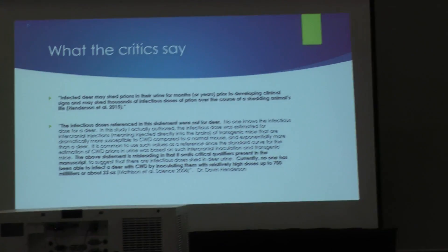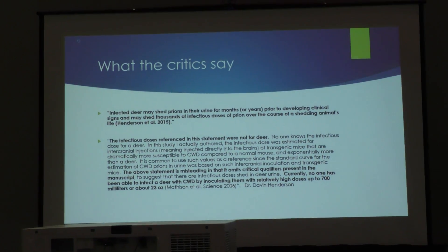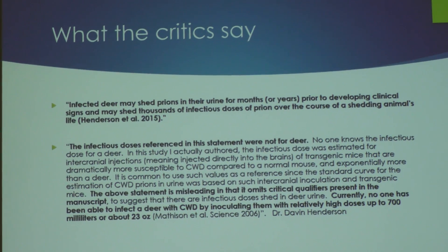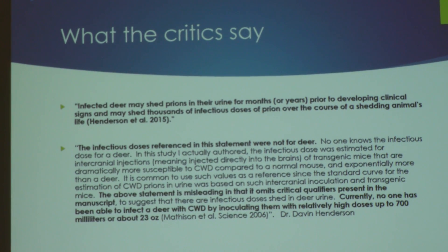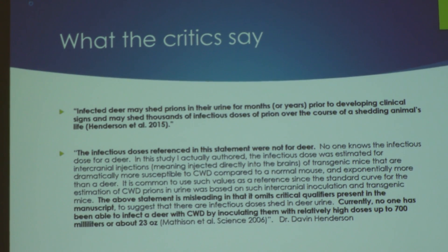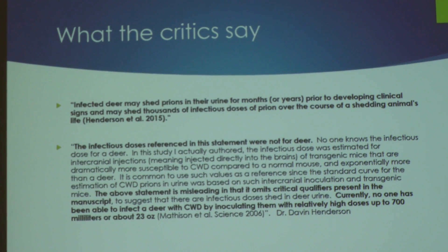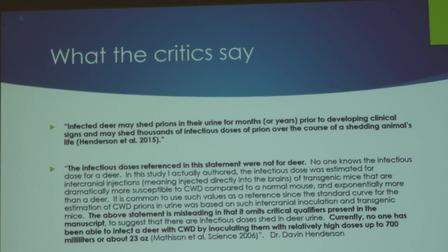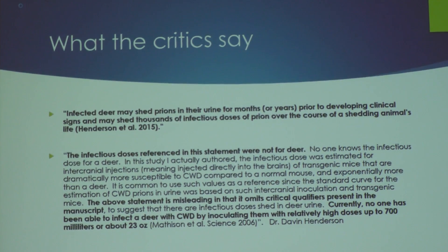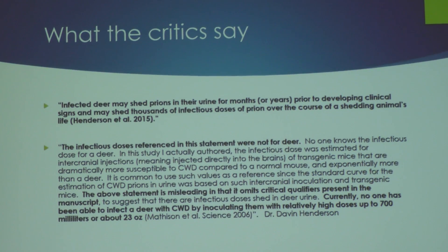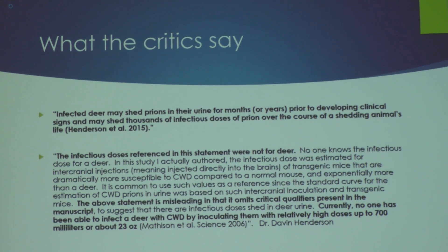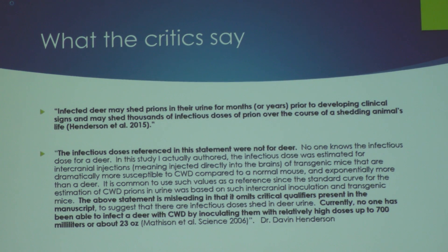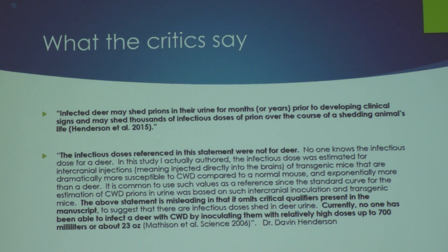A document released recently cited a figure talking about infectious doses shed over the course of disease — taken from one of my manuscripts — but it omits a couple of very important facts. We were referring to infectious doses for transgenic mice inoculated intracranially. To say there are infectious doses for deer shed in urine, we don't actually know what that dose is — no one has been able to inoculate a deer with urine and get it sick. When someone makes a comment like that without the qualifications present in the manuscript, it takes it out of context.